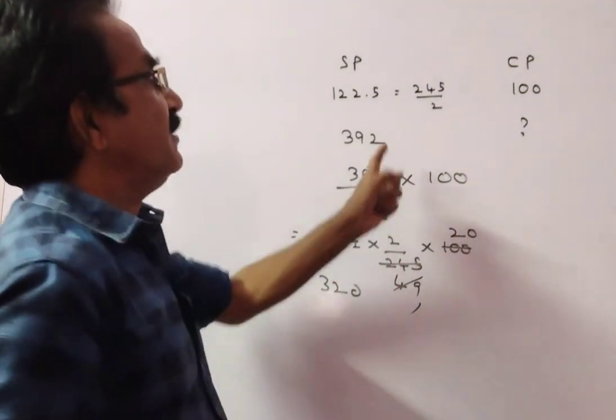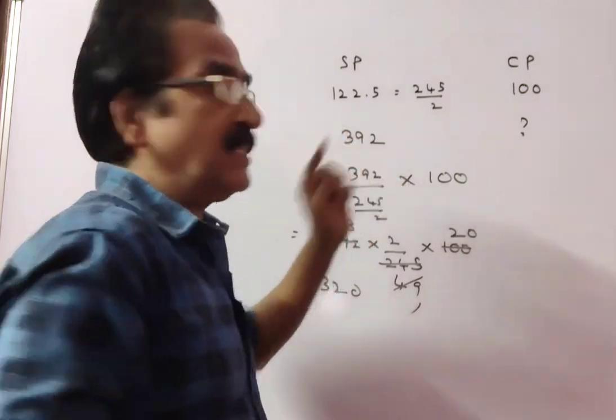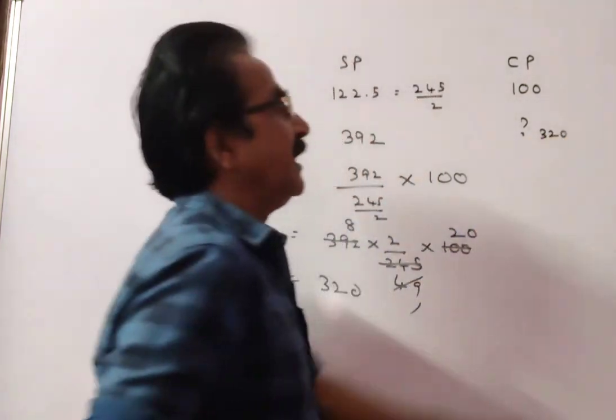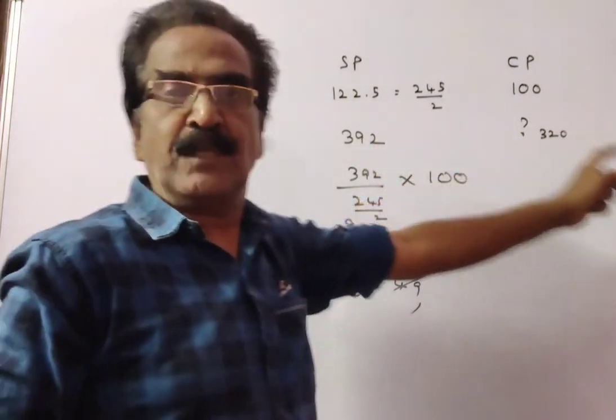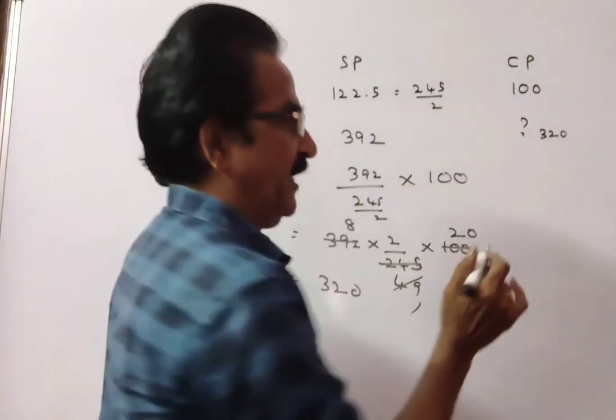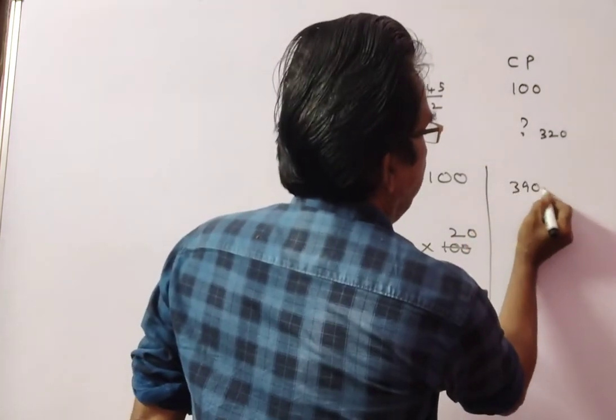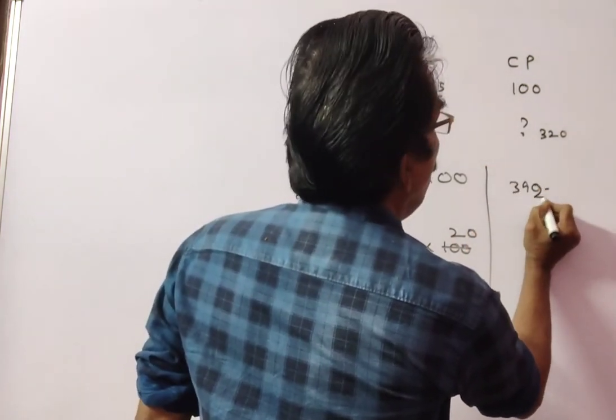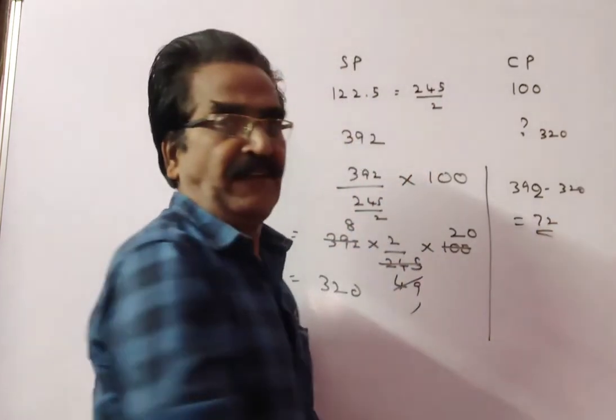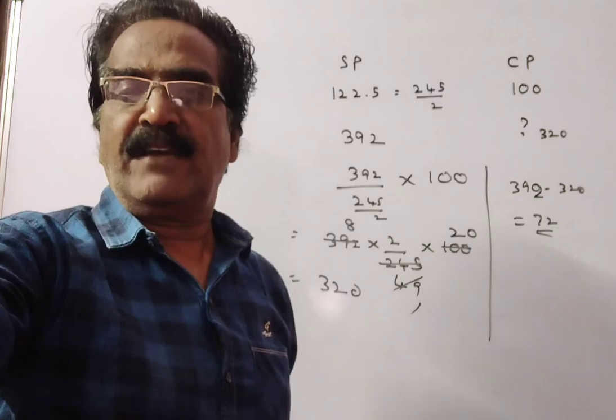Friends, if this is the selling price, the cost price is 320. Then the profit is obviously 392 minus 320, that is 72 rupees. Profit is 392 minus 320, which equals 72 rupees. Okay friends, thank you, have a nice day.